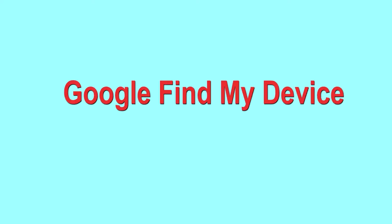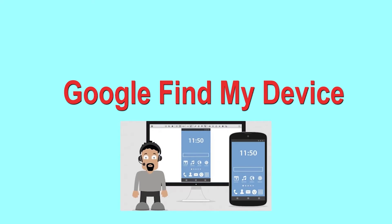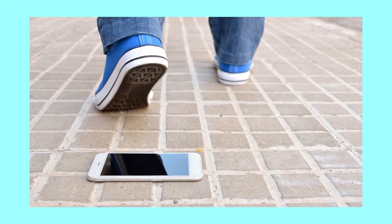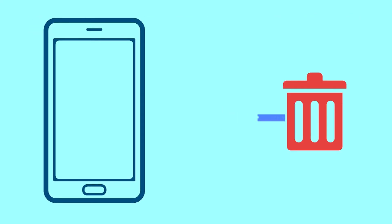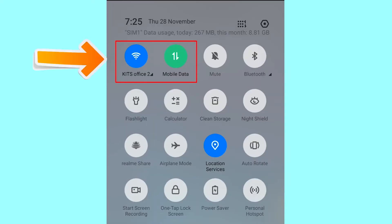Hard reset with Google Find My Device. This is the best method to reset your Android phone remotely. This method is useful when you lose your phone or are not able to access your mobile. This method also deletes all your Android phone data. After your device has been erased, you can't locate it. You can only use this method if you already added a Gmail account to your phone and have an active internet connection. If your device is offline, erasing will begin when it next comes online.